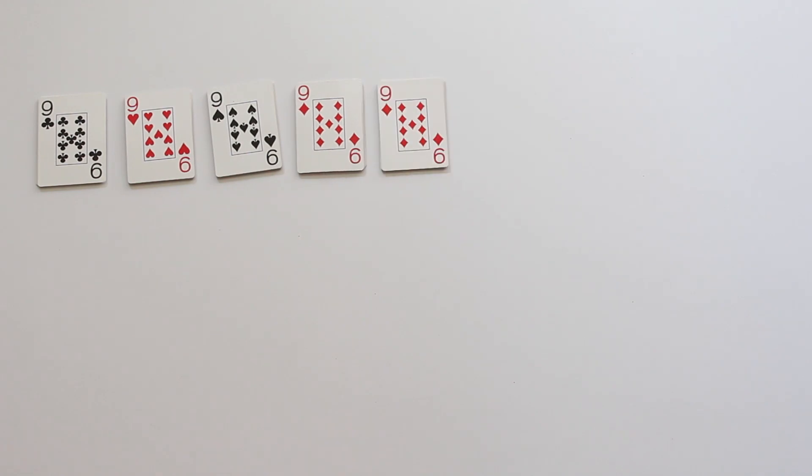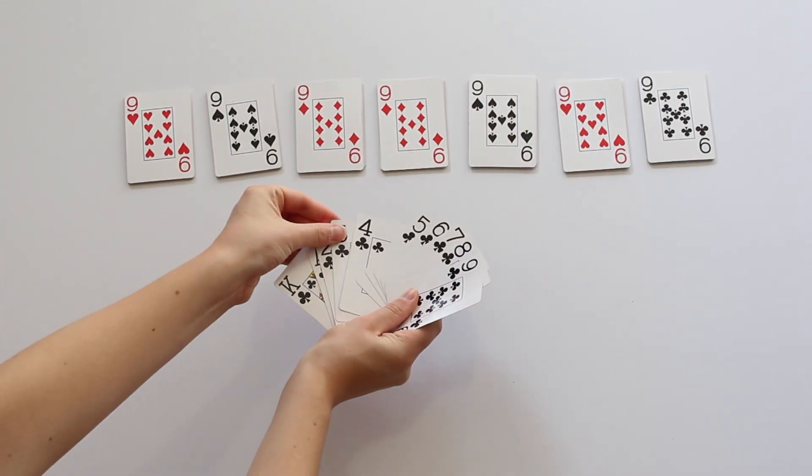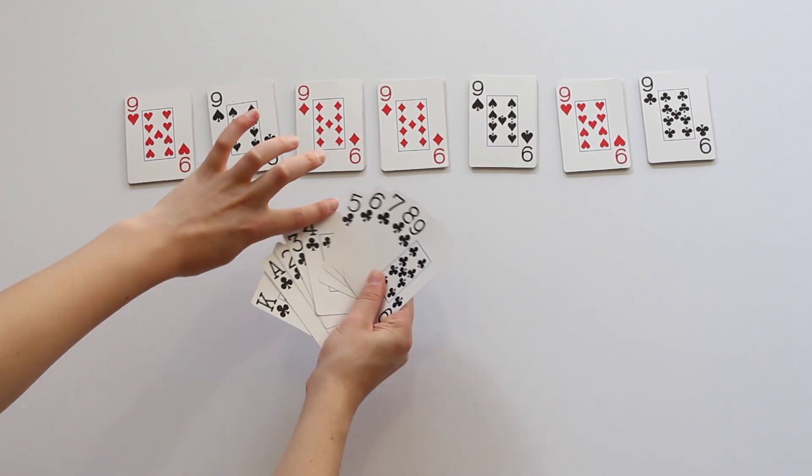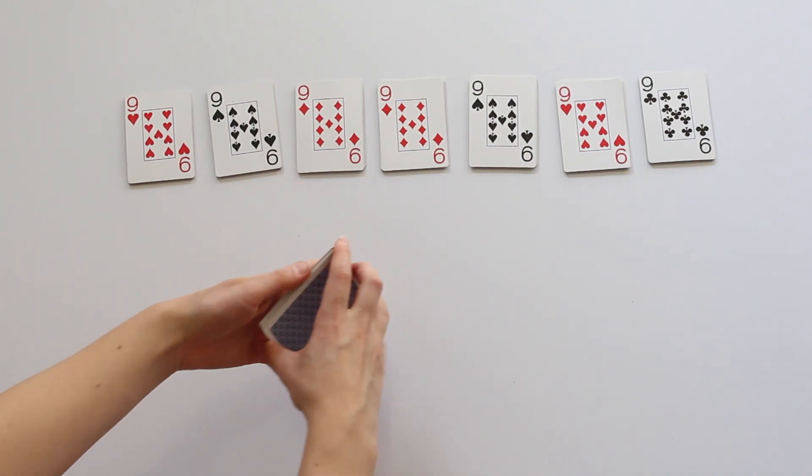So I went out and found two decks of cards. Then I made eight piles. King will be zero, ace will be one, and we have two through nine. Each pile will be a different digit of our randomly generated number.